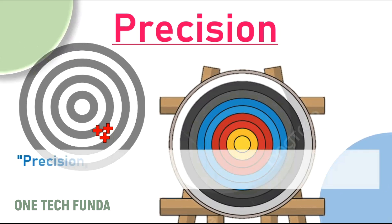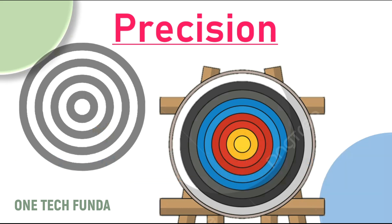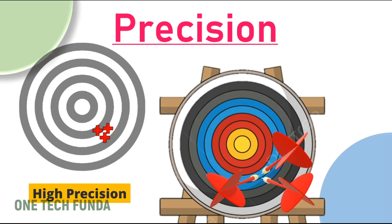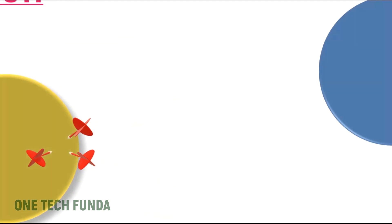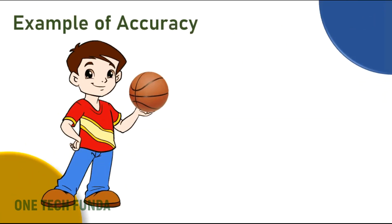Precision, on the other hand, is about the consistency of measurements. Imagine if your arrows consistently land close to each other but away from the bullseye — that means you have high precision.